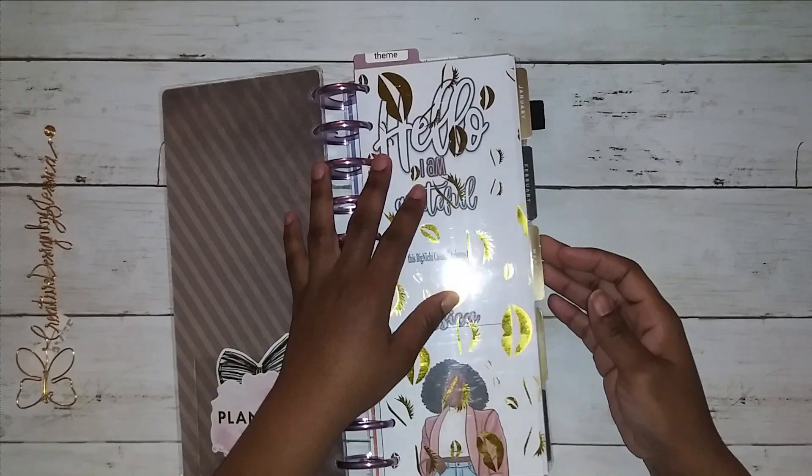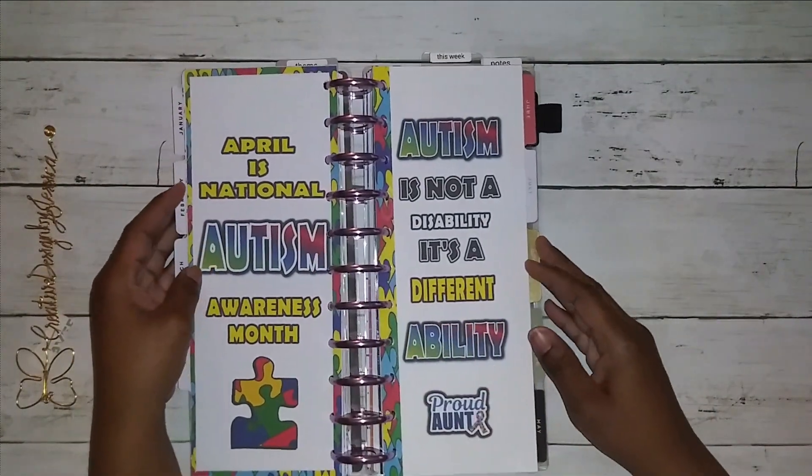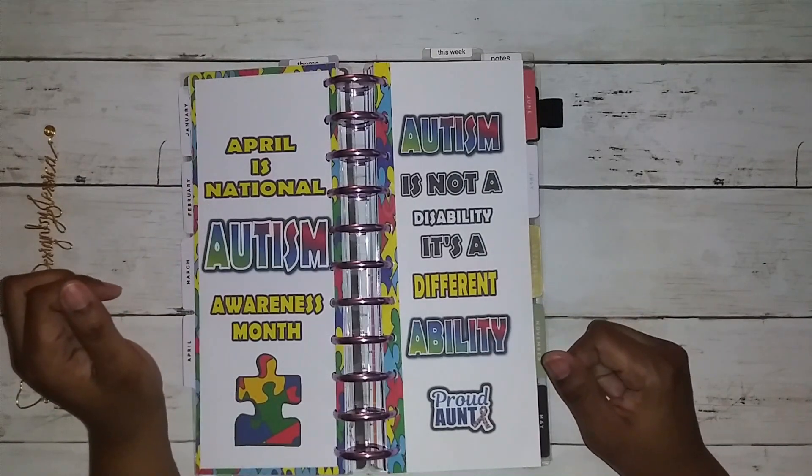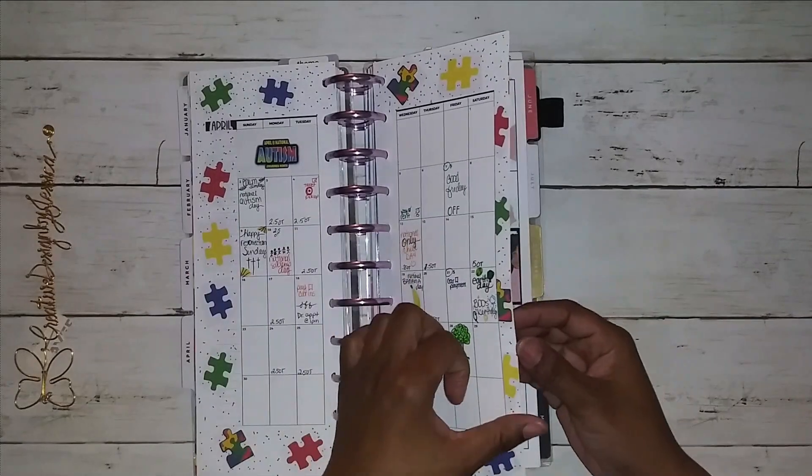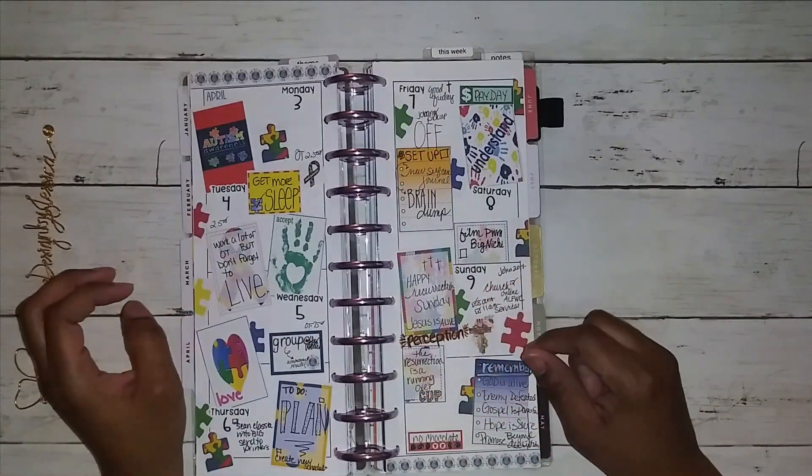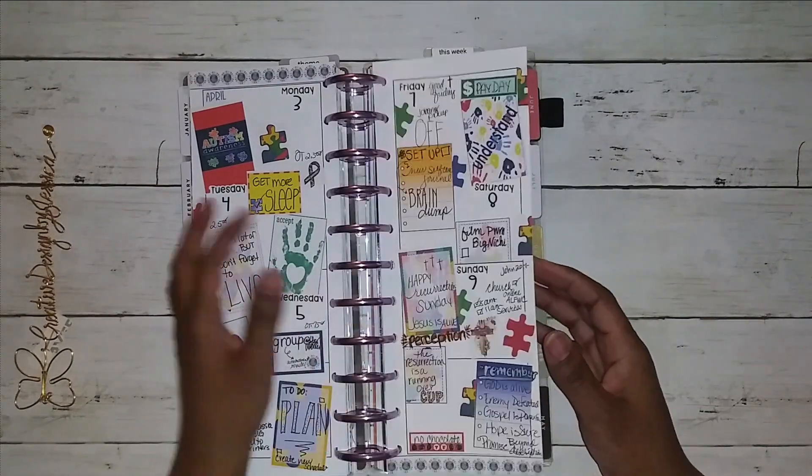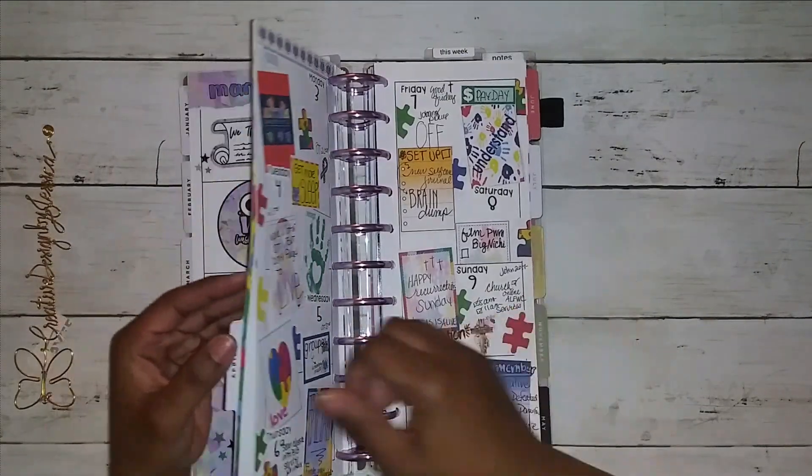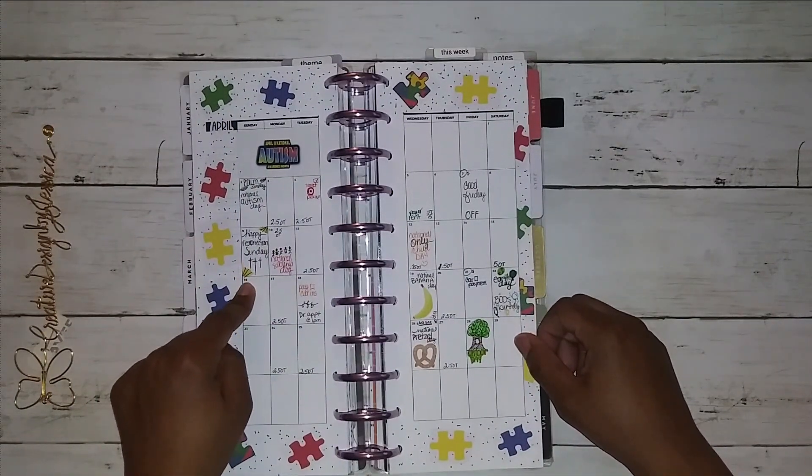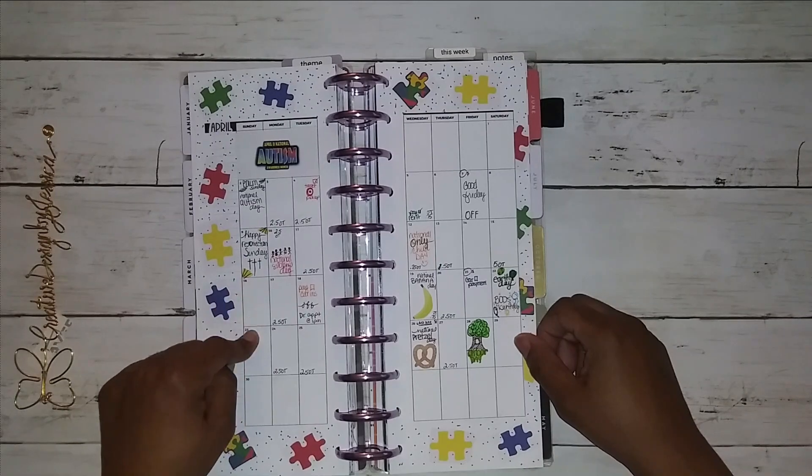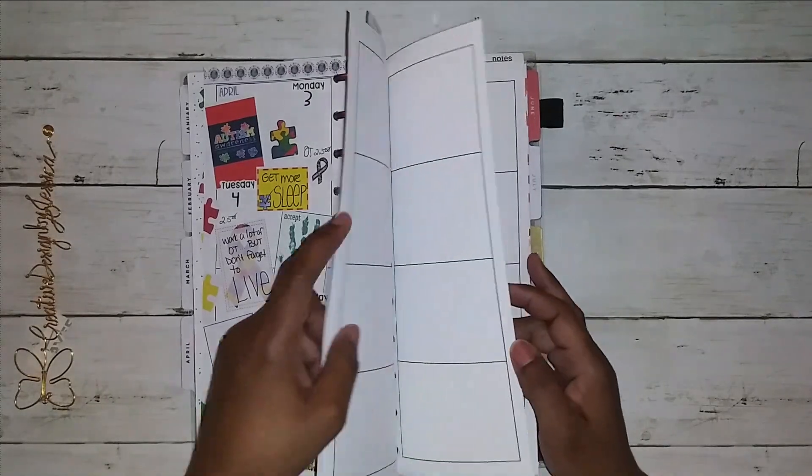So we are going to be planning in April. Already halfway through the month. Can you stand it? As you know, April is National Autism Awareness Month. So I dedicated my month and my first week to Autism Awareness. We're going to be planning for April the 16th through the 23rd. Wow, we getting along there y'all. Trucking, trucking along here.